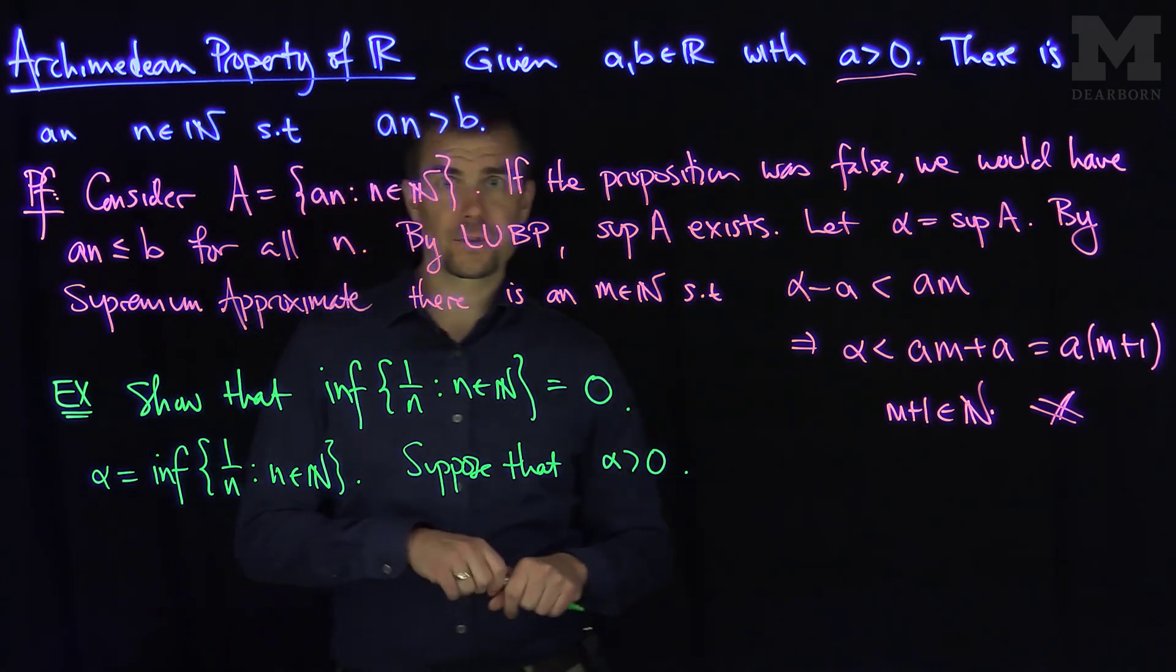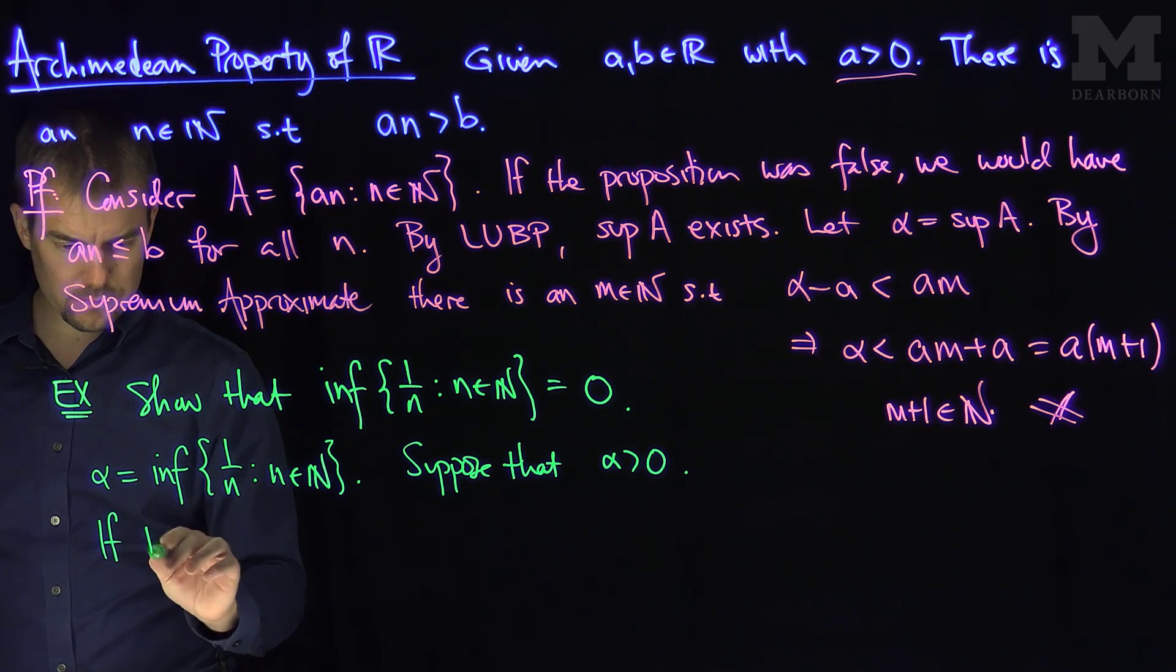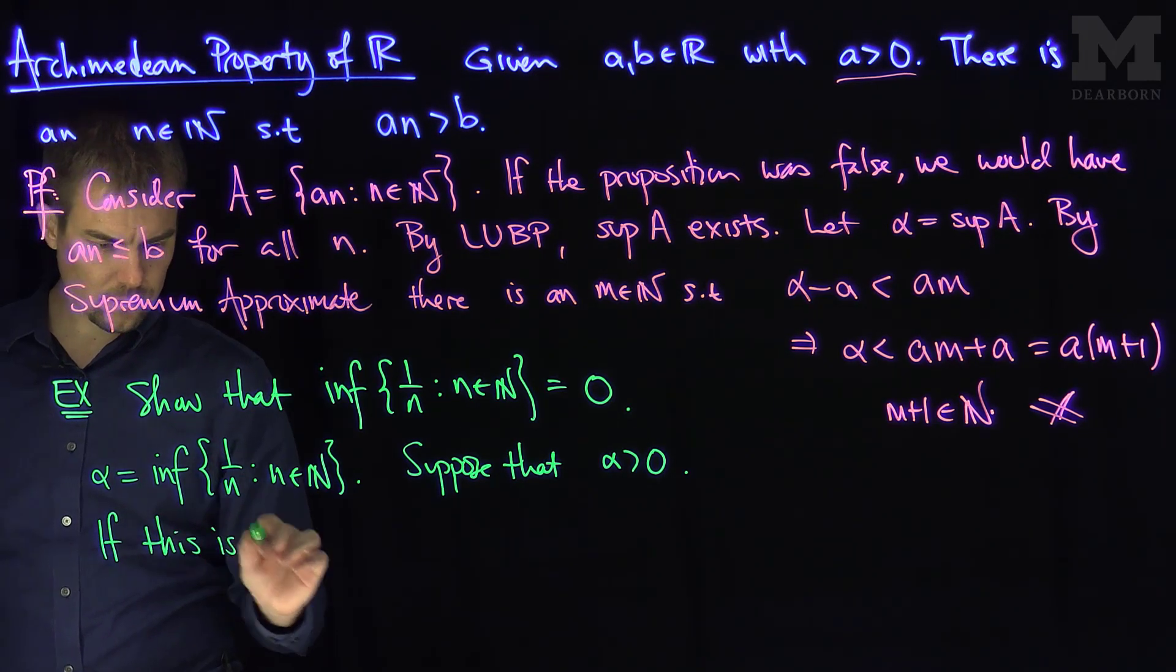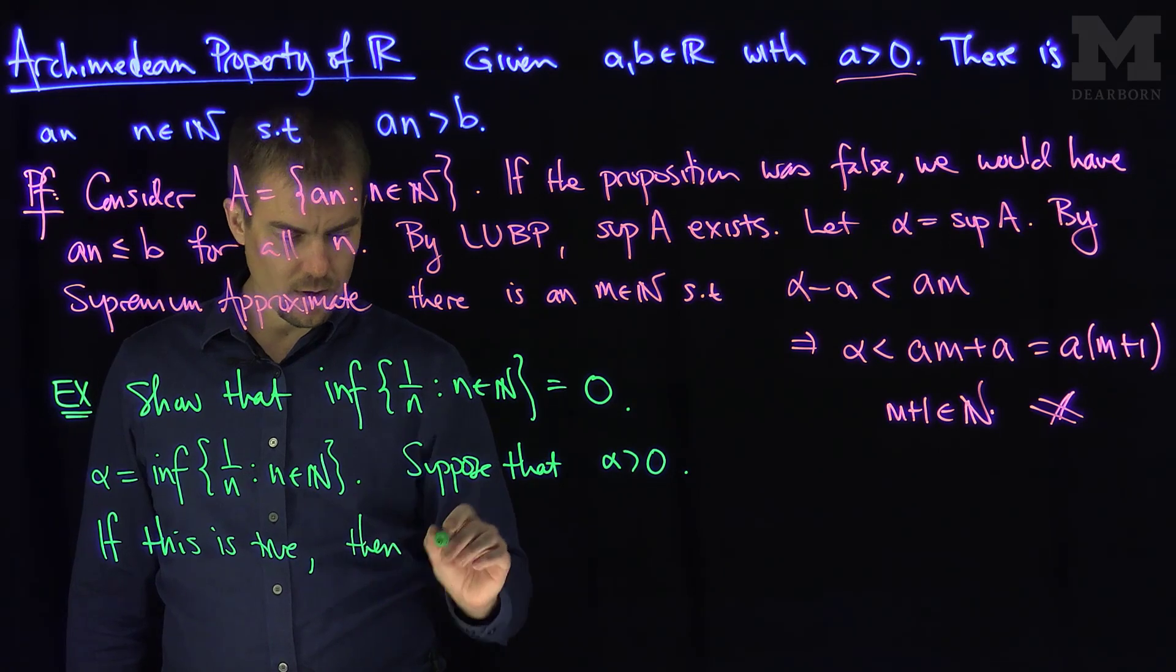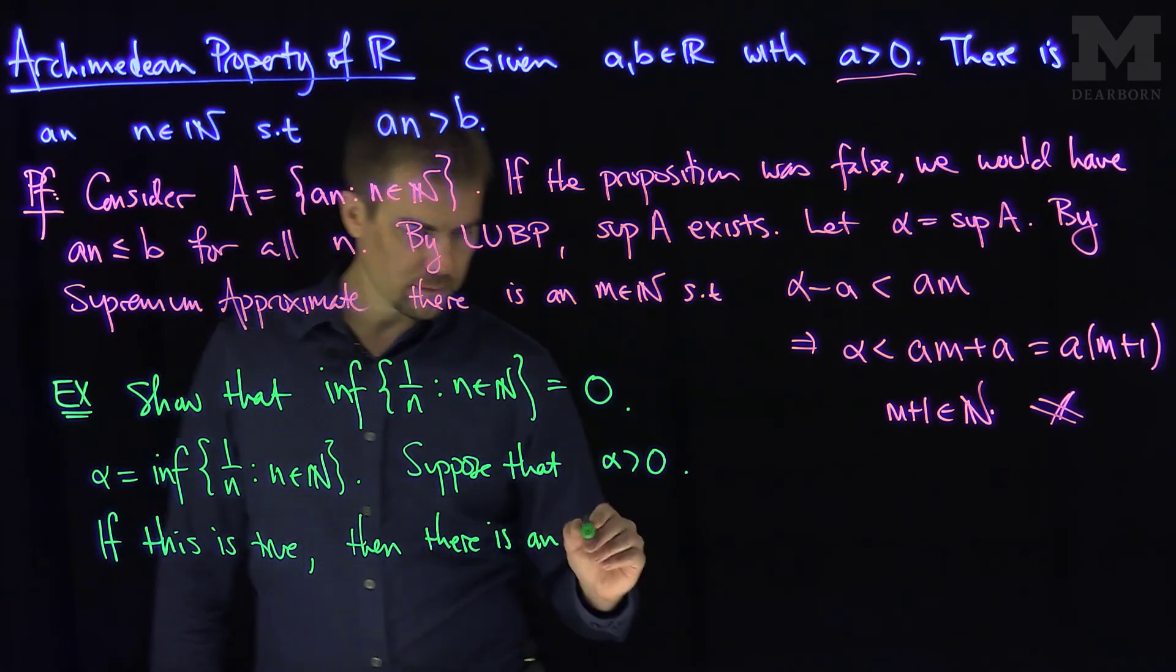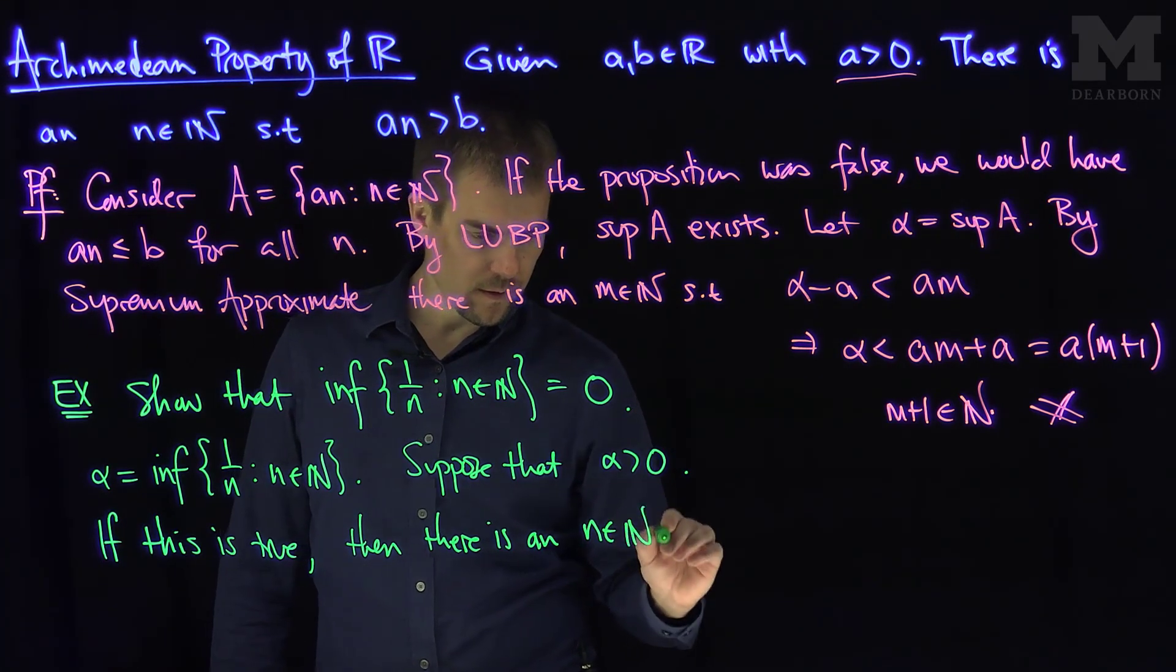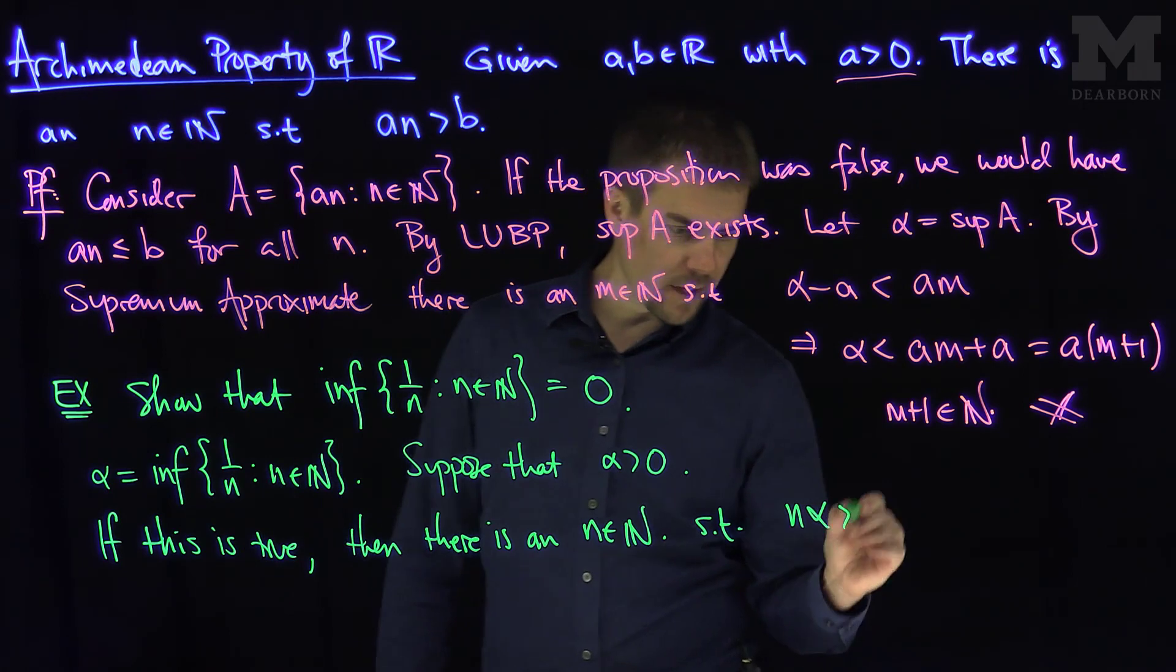Well, if alpha is greater than zero, by the Archimedean property, if this is so, then there is an n in N such that n times alpha is bigger than one.